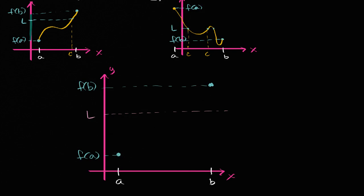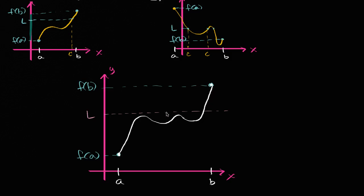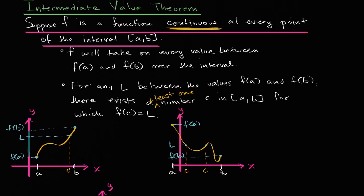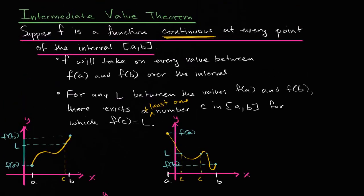Let me try to get from f of a to f of b without ever crossing this dotted line at l. I try to avoid it — but how am I going to get there without picking up my pencil? I really need to cross that line. And there you go — I took on the value l, and it happened at c, which is in that closed interval. I'm not giving you a proof here, but hopefully you have a good intuition that the Intermediate Value Theorem is kind of common sense. The key is you're dealing with a continuous function: if you draw it between the coordinates (a, f(a)) and (b, f(b)) without picking up your pencil, it's going to take on every value between f of a and f of b.